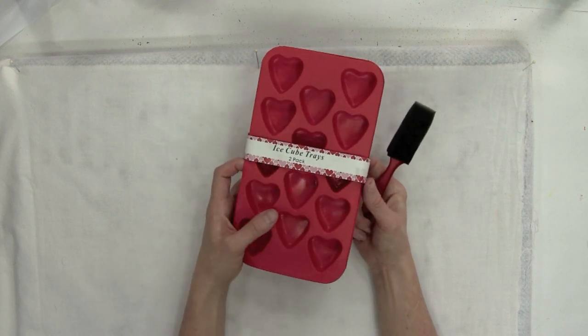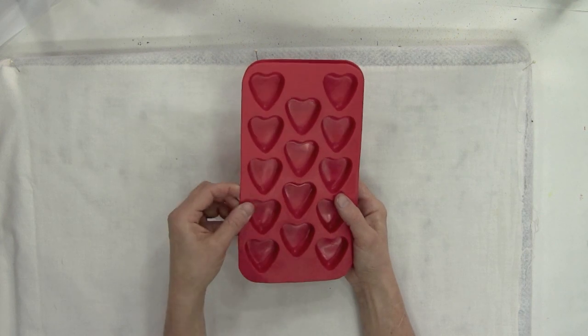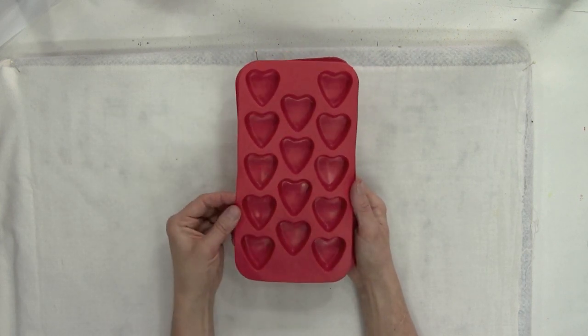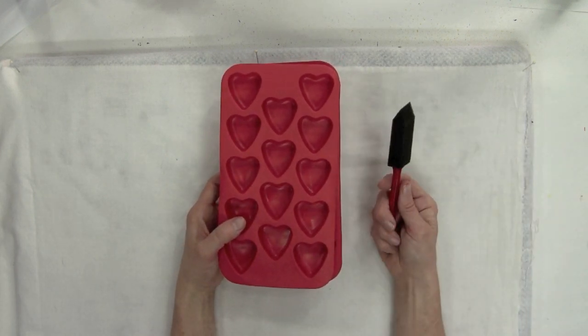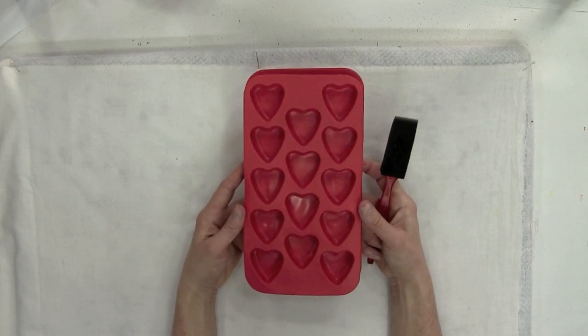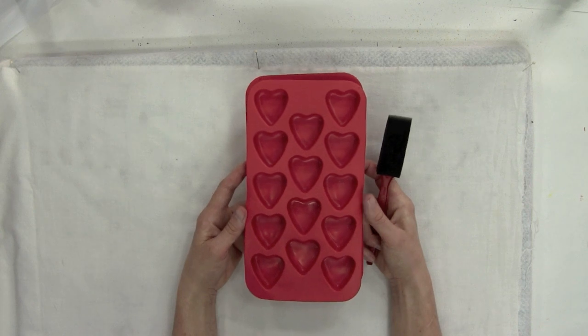Last year I picked up these ice cube trays. They come two to a pack and they're flexible. They will make a great printing plate. Since they are flexible, I think it's easier to apply the paint with a foam brush rather than a brayer. So I'm going to use some paint and start printing away.